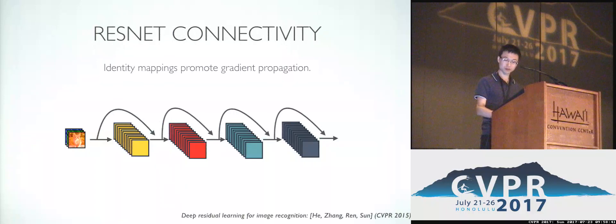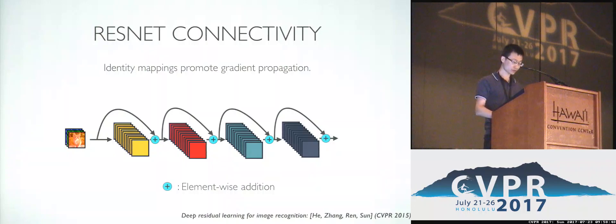Two years ago, the Deep Residual Network was proposed. It introduces the identity connections to bypass signals across layers, and this greatly promotes gradient propagation in the network. The ResNet has achieved unprecedentedly good results on many challenging competition tasks.